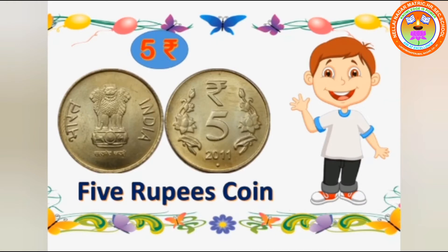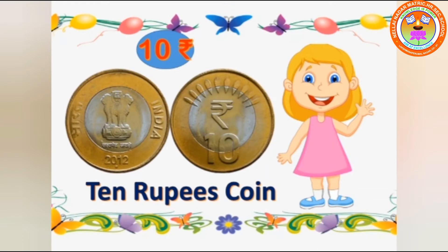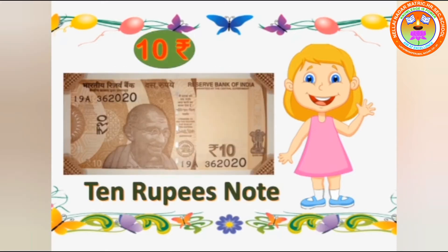This is 5 rupee coin. What is this, children? This is 5 rupee coin. This is 10 rupee coin. What is this, children? This is 10 rupee coin.